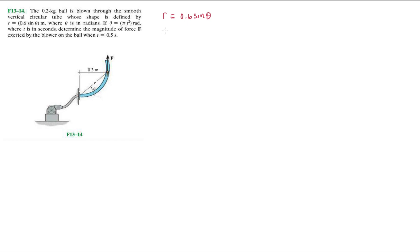Let's go ahead and get the velocity, ṙ, which will be 0.6 cosine θ times θ̇. That θ̇ always comes out because of the chain rule.